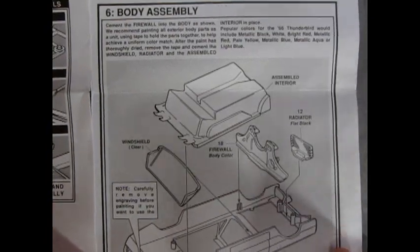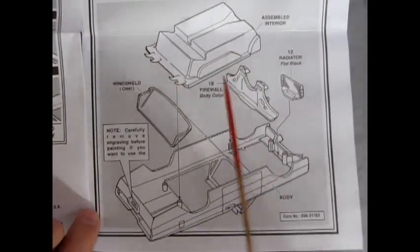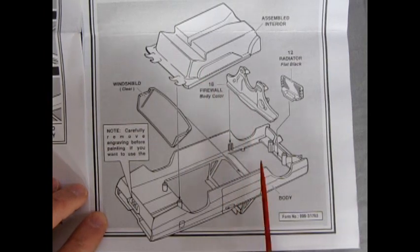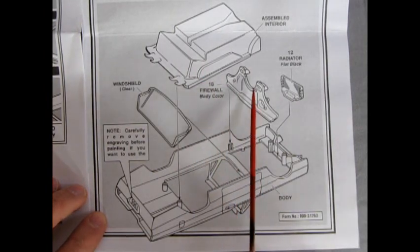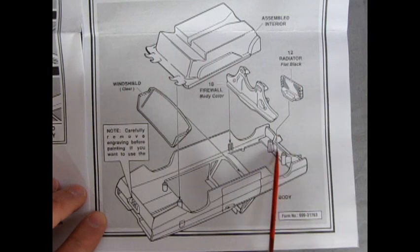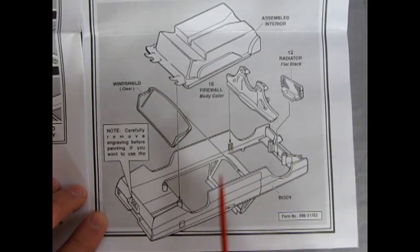And then in step six, which is a bit longer, we have our body assembly. And this shows the interior bucket completed going in. Windshield first. Then the firewall. Your radiator support gluing in here. And then the bucket dropping in.